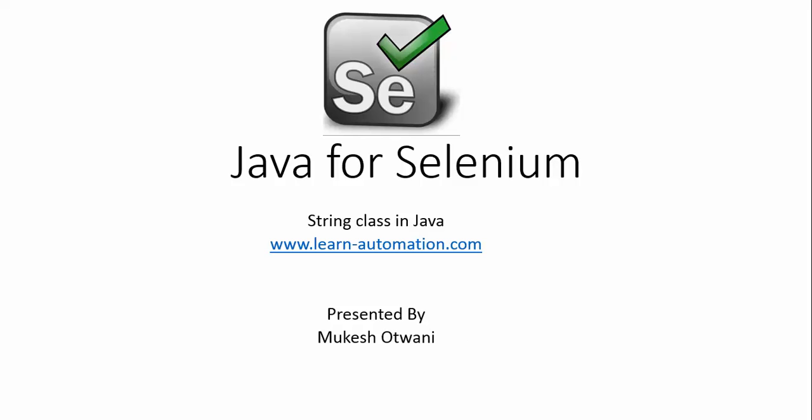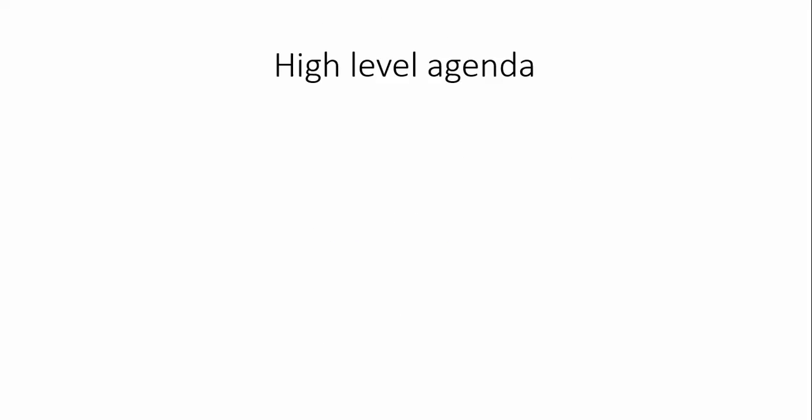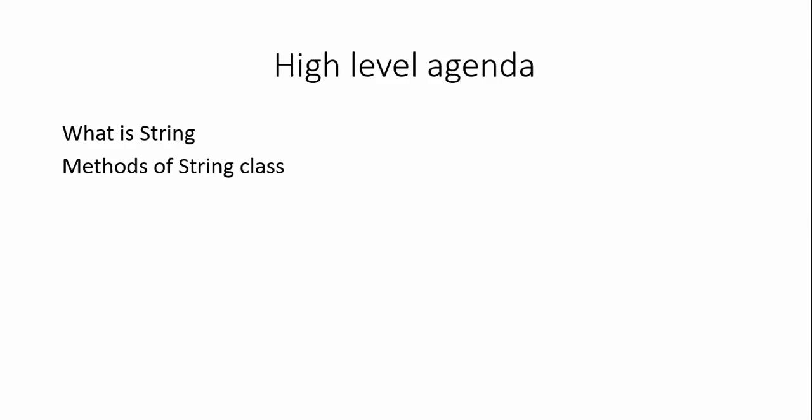Welcome back to another video on Java for Selenium. In this video we will mainly discuss the String class in Java. String class is very important and you can say the most powerful class in Java, which will help you perform many operations. Especially in Selenium, we are going to use the String class multiple times because most of the time we have to deal with strings — capturing error messages, titles, help text, and comparing for assertions. We will discuss what the String class is, what are the different methods inside it, and see examples one by one.